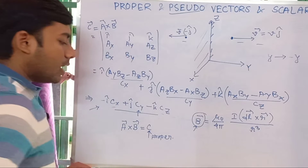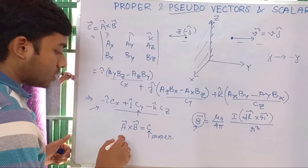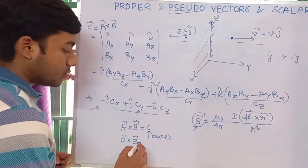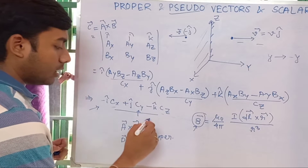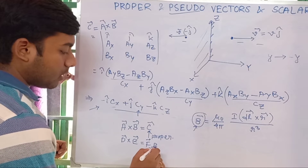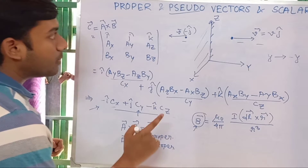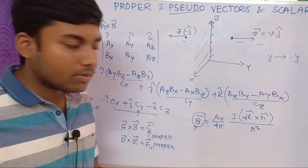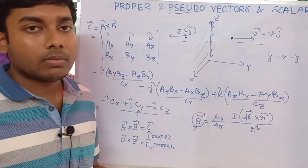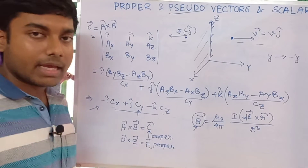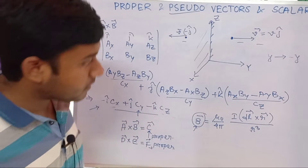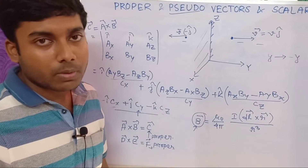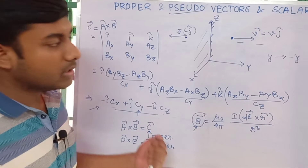The corollaries are: (1) the cross product of two proper vectors gives a pseudo vector; (2) the cross product of a proper vector and a pseudo vector gives a proper vector; (3) the cross product of two pseudo vectors gives a pseudo vector — wait, actually gives a proper vector. Examples of pseudo vectors include angular momentum, spin angular momentum, and angular velocity.